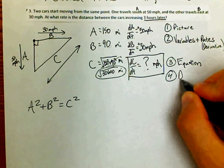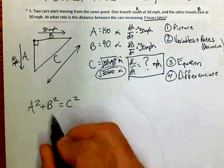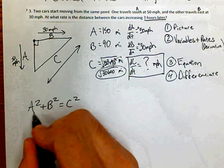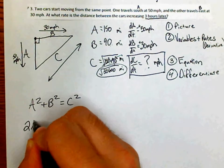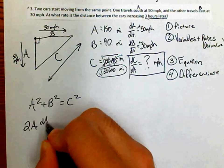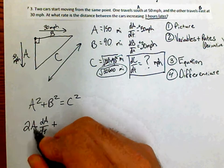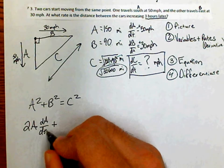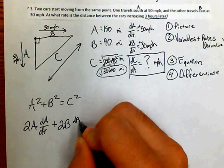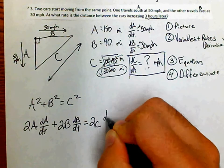Now we differentiate — because I don't care about the equation connecting the sides, I care about the equation connecting the rates. Using implicit differentiation and the chain rule: the derivative of a² is 2a · (da/dt), plus 2b · (db/dt), equals 2c · (dc/dt).